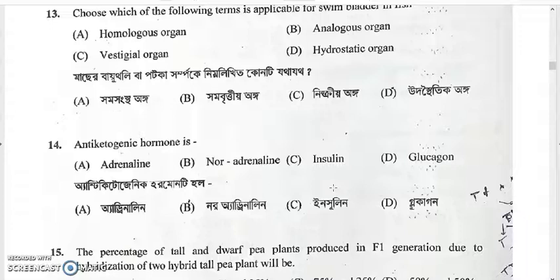The antiketogenic hormone is insulin. Insulin is known as the antiketogenic hormone.